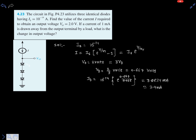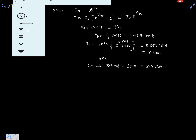Now, the output Vout should be 2 volts, but the output is drawing a current of 1 milliampere. So the remaining diode current Id is 3.9 milliamperes minus 1 milliampere, which equals 2.9 milliamperes.